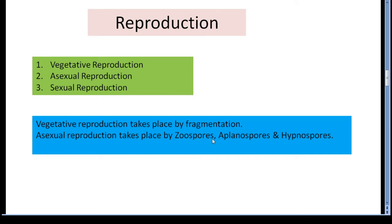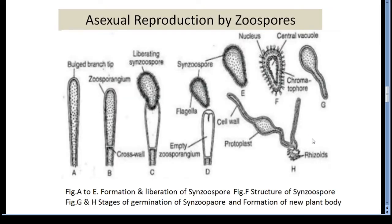Asexual reproduction takes place by zoospores, aplanospores and hypnospores. Zoospore formation is a very common and effective method of asexual reproduction in aquatic species of Vaucheria. The zoospore is a multi-nucleate, multi-flagellated structure produced singly in a zoosporangium. The zoosporangium is an elongated club-shaped structure that develops at the tip of the lateral branches. The zoosporangium gets swollen due to the accumulation of food reserves, chloroplasts and nuclei, and is then cut from the rest of the branch by a septum.